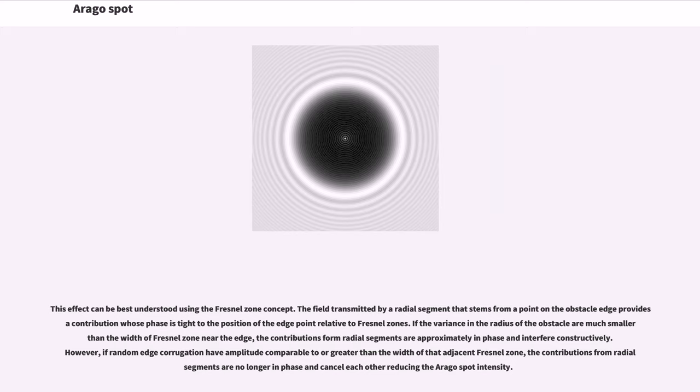This effect can be best understood using the Fresnel zone concept. The field transmitted by a radial segment that stems from a point on the obstacle edge provides a contribution whose phase is tied to the position of the edge point relative to Fresnel zones. If the variance in the radius of the obstacle is much smaller than the width of Fresnel zone near the edge, the contributions from radial segments are approximately in phase and interfere constructively. However, if random edge corrugation has amplitude comparable to or greater than the width of that adjacent Fresnel zone, the contributions from radial segments are no longer in phase and cancel each other, reducing the Arago spot intensity.